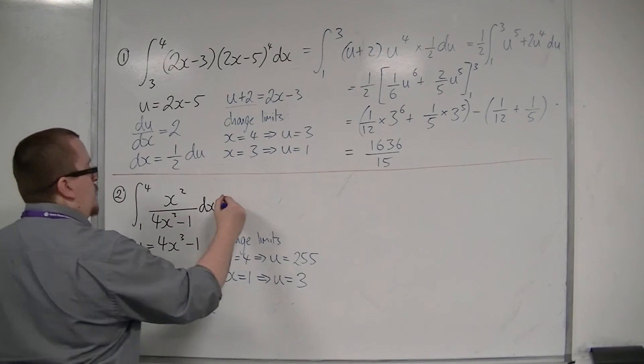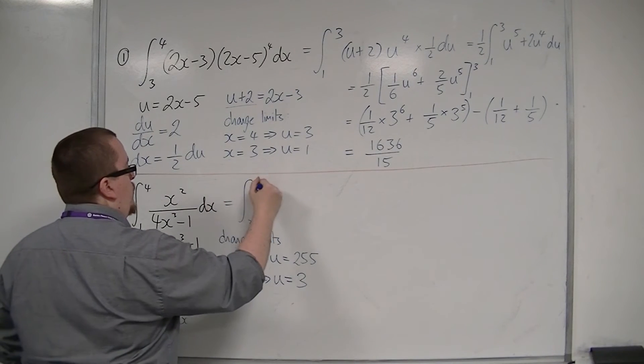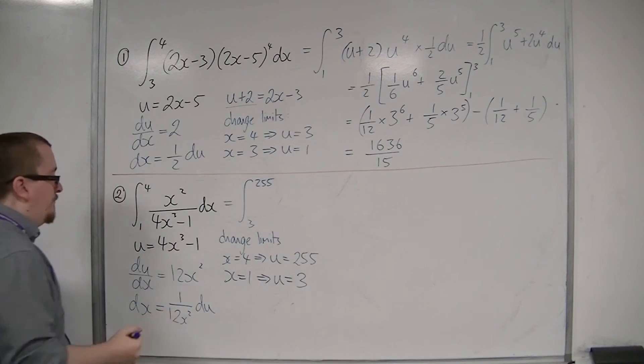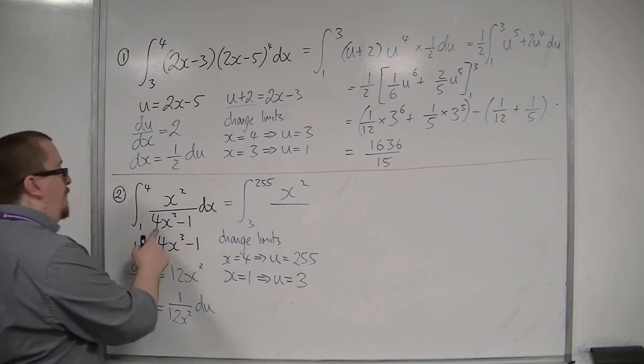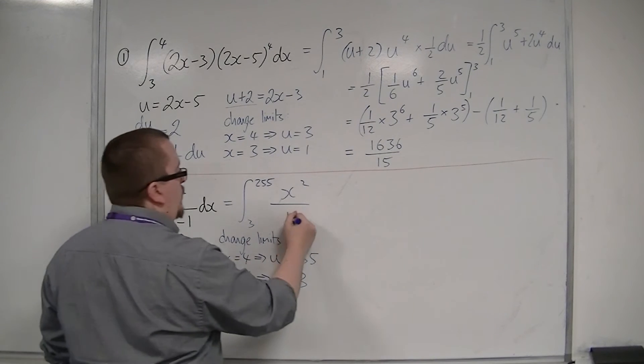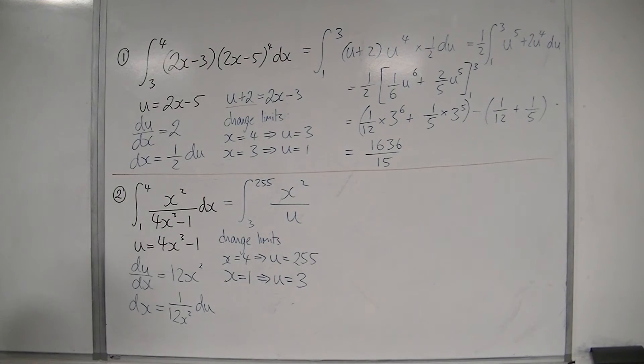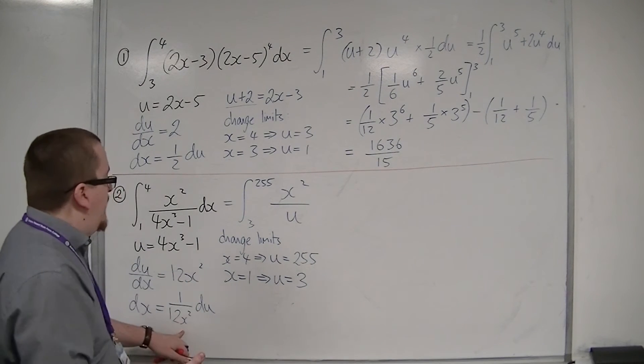So I'm now integrating between 3 and 255. I've got the x squared on the top. I've got 4x cubed minus 1 on the bottom of the fraction. I've got dx being replaced with 1 over 12x squared du.